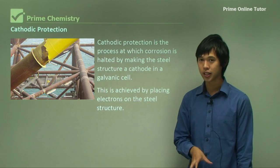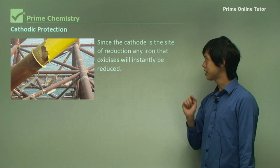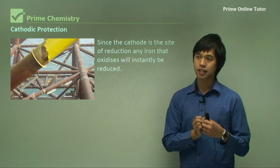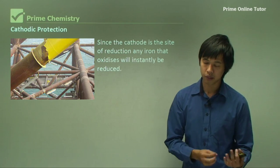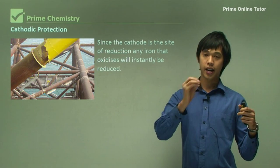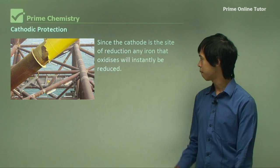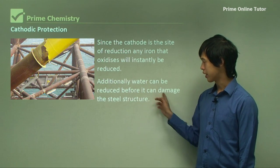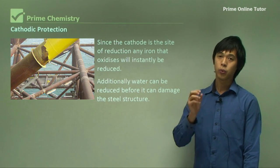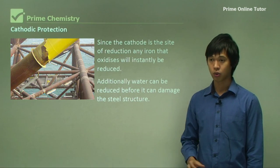Because electrons are pumped onto the steel, it is the cathode. Since the cathode is the site of reduction, any iron that oxidizes will instantly be reduced back into iron. So if an iron atom gets oxidized by an oxygen molecule, because there are so many electrons on the surface of the steel structure, the iron ion that formed will instantly be reduced back into pure iron. Additionally, water can be reduced before it can damage the steel structure — any water on top of it can actually be reduced into oxygen and hydrogen or other chemicals, stopping it from hurting the iron before it even starts.